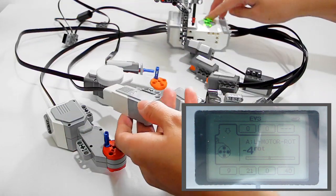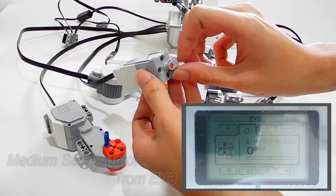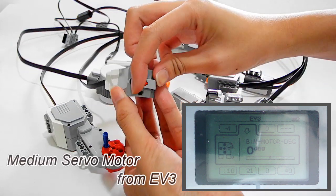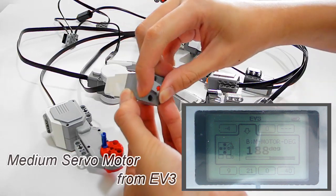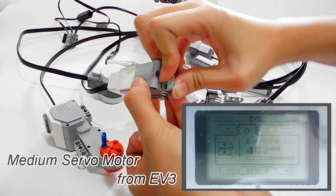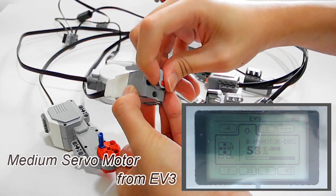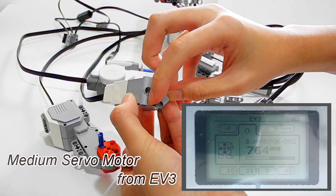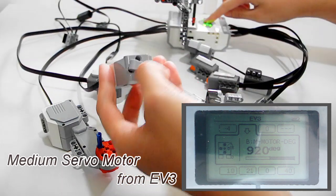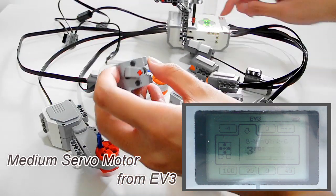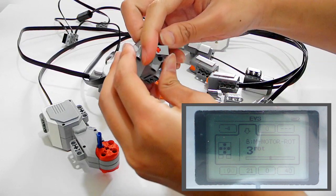And the next one, the NXT Large Servo motor is also the same. The first mode is used to detect the degrees rotated, and the second one is used to detect the number of rotations.